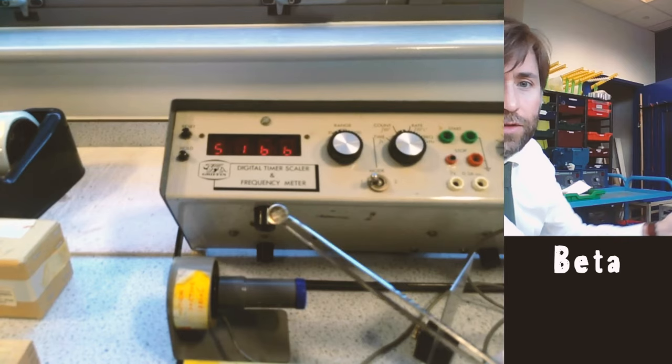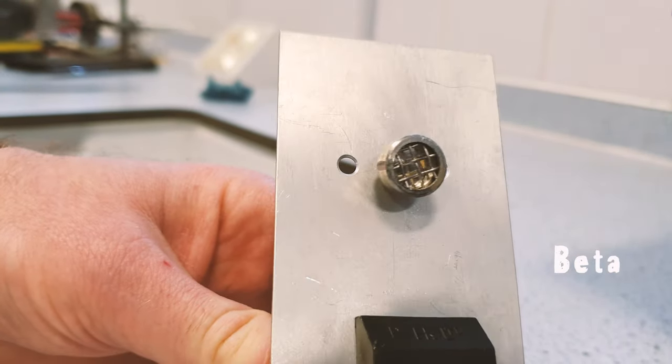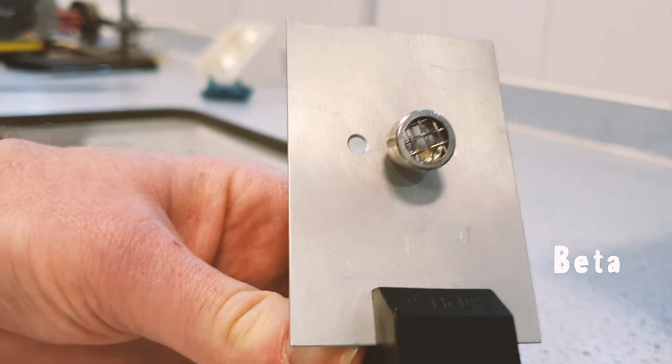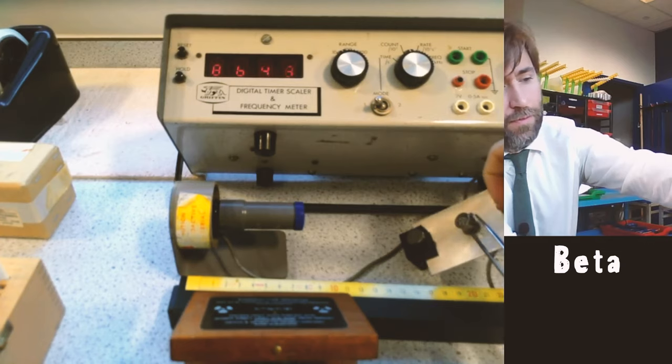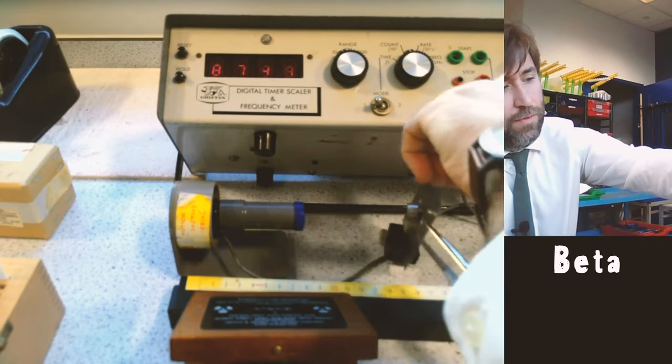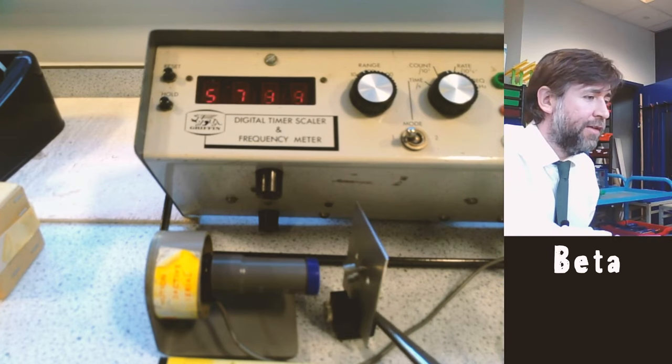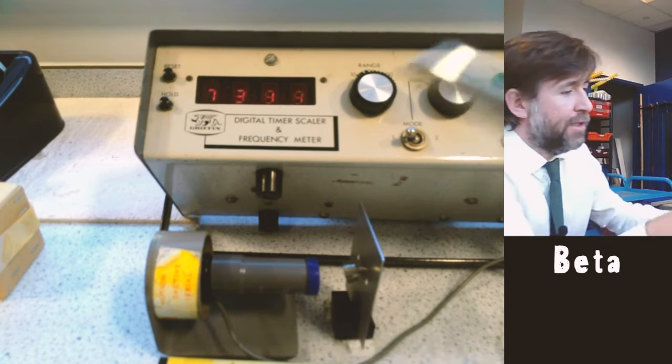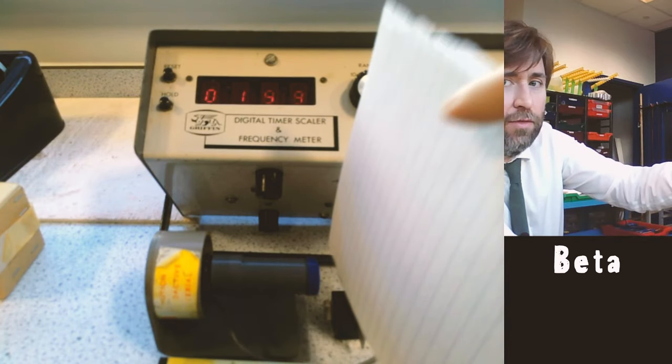In there is just an ordinary piece of metal. And you can see those numbers are going up very rapidly. Now this one is actually a beta emitter, so when I put the paper in, the numbers won't go down very much at all.